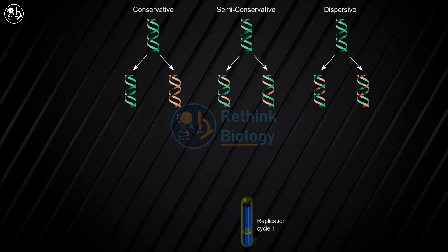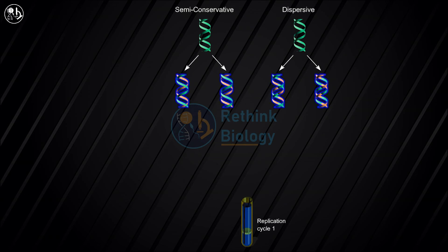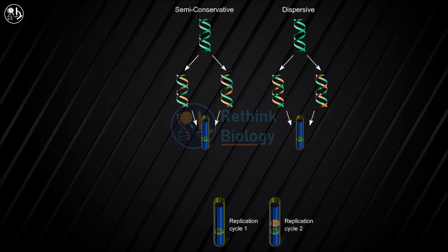If DNA molecules in the sample have two different densities, two bands result. The position of the bands indicates the density of the DNA molecules. After one replication cycle, the conservative model predicted equal amounts of heavy-heavy and light-light DNA, resulting in two bands — so that model could be ruled out. The semi-conservative and dispersive models both predicted combinations of parental and progeny DNA resulting in one band of intermediate density, so more analysis was required. A second replication was performed, and two bands were seen: one of intermediate density and one of light density.